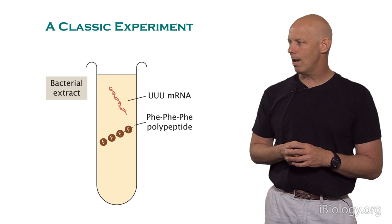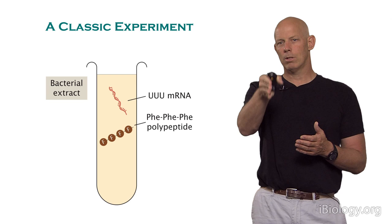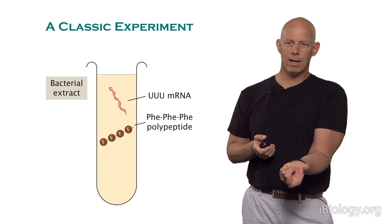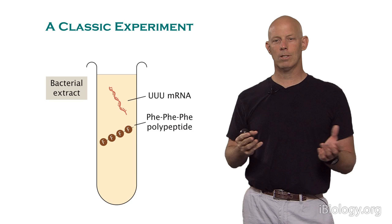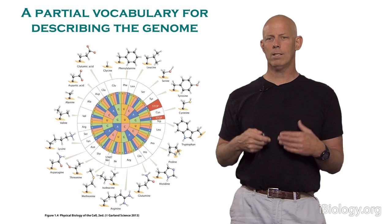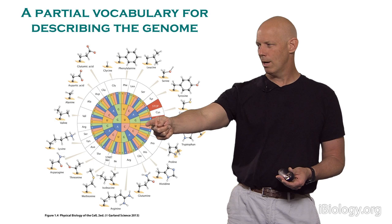The way this experiment happened was synthetic biology, if you like — though it wasn't called that at the time. They synthesized mRNAs that were repetitive: U, U, U, U, and so on. They fed these mRNAs to a cell extract and asked which radio-labeled amino acids were incorporated into the protein. What they found was a chain of phenylalanine, phenylalanine, phenylalanine, and so on. The consequence was that they cracked the genetic code. By doing this repeatedly, they were able to essentially figure out the entire genetic code.